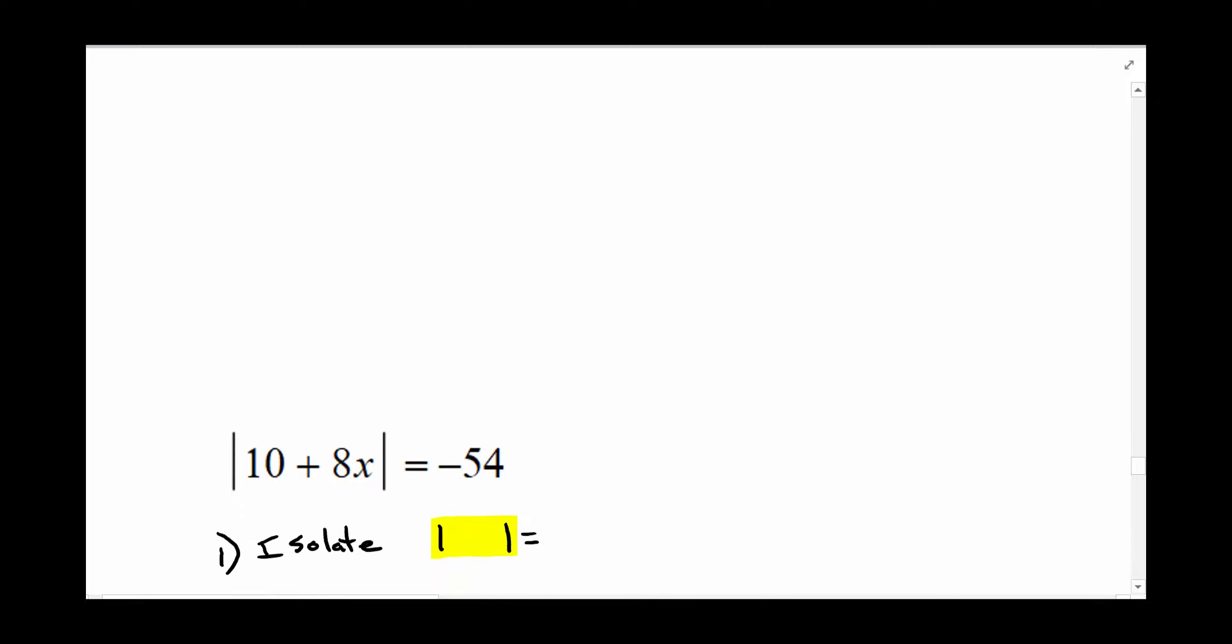The first thing you're going to want to do is isolate for the absolute value signs. So if there would have been a number on the outside of here and maybe a plus or minus a number, you're going to want to get rid of all of that stuff and get the absolute value by itself first.